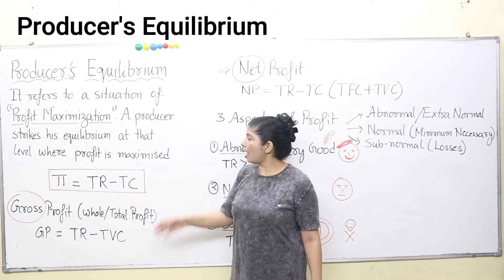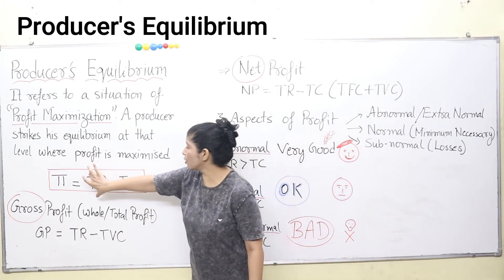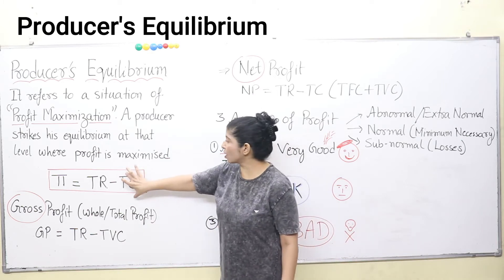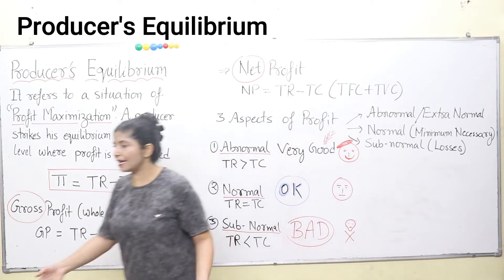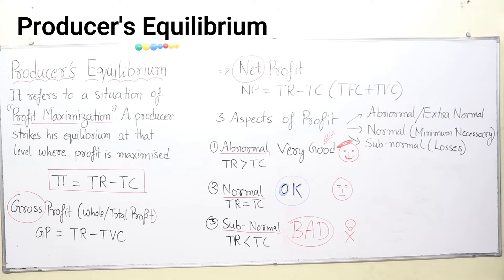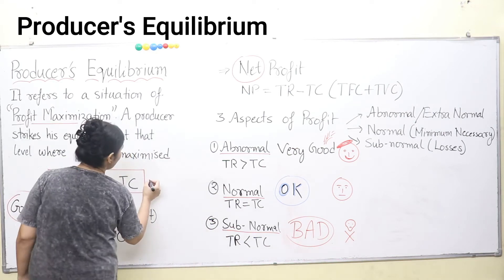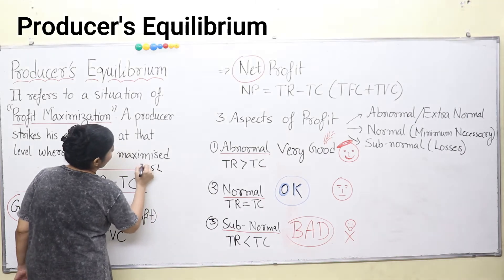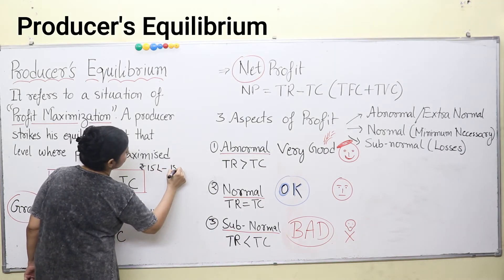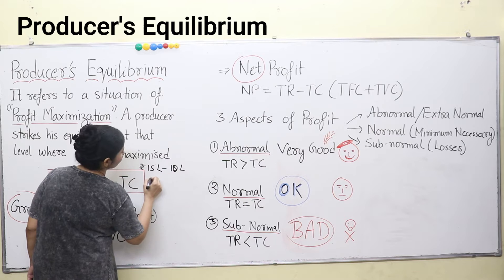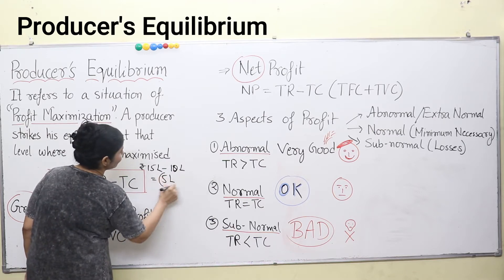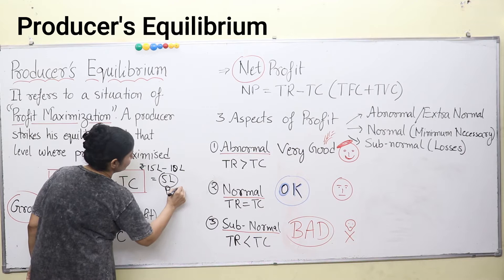Let's take an example. A producer earns rupees 15 lakhs and his total cost is 10 lakhs. So his total revenue is 15 lakhs and his total cost is 10 lakhs. The balance is 5 lakhs — that's his profit.